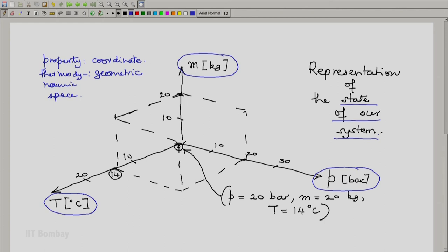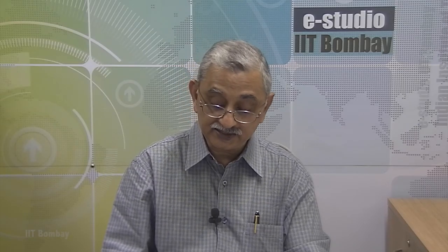So one should remember and appreciate the analogy between the geometric space and the thermodynamic space. This is known as thermodynamic state space. In the thermodynamic state space, each coordinate, in this particular case pressure, mass, and temperature, represents one thermodynamic property. A state is represented by specified values of that property. In this particular case, pressure of 20 bar, mass of 20 kg, and temperature of 14 degrees C.